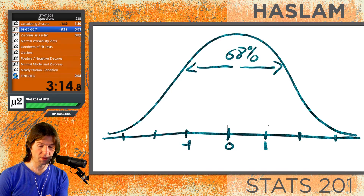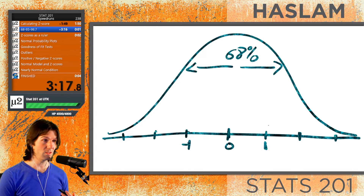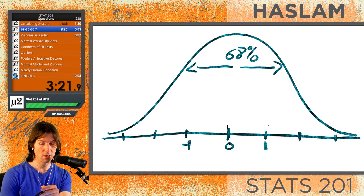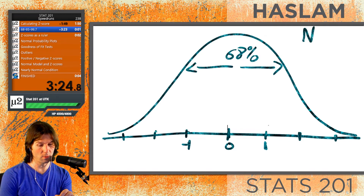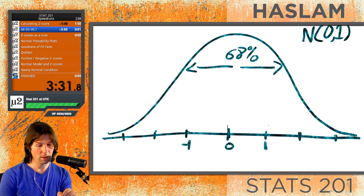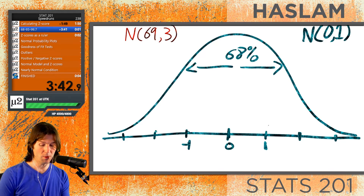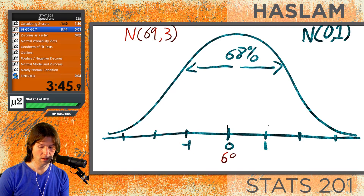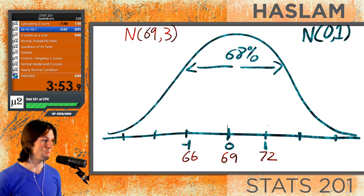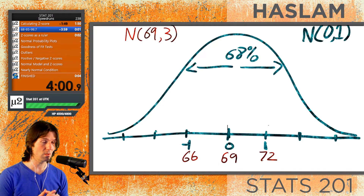I'm putting down the standard normal curve on the bottom showing z-scores. These observations are within plus or minus one standard deviation. I'm also going to use the context of a normal curve with a mean of 69 and a standard deviation of 3. So we'd say that 68% of people's heights are between 66 inches and 72 inches according to the normal model.